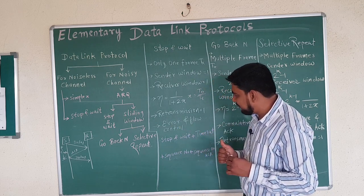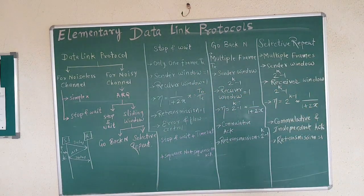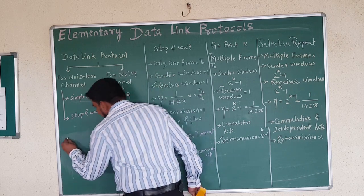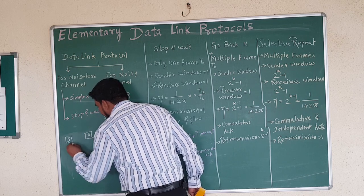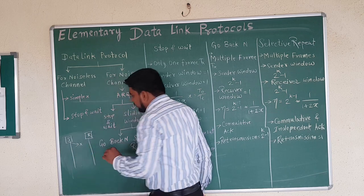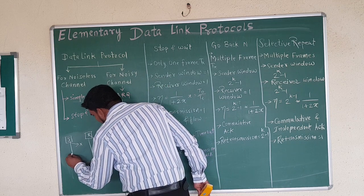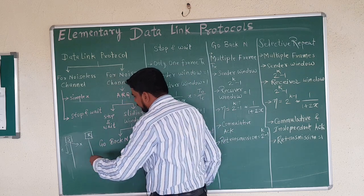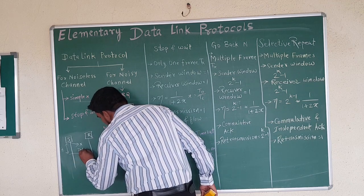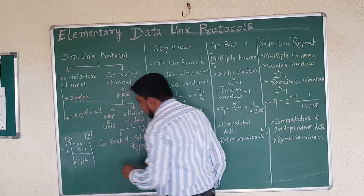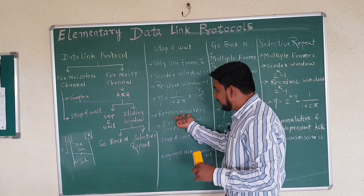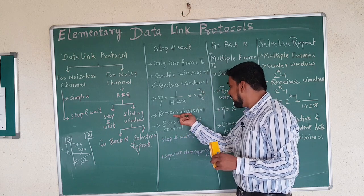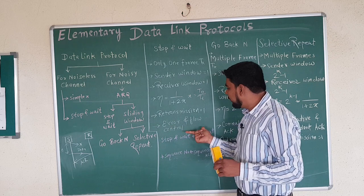Retransmission: the sender sends information, but it is lost and does not reach the receiver. The sender waits for an acknowledgement for a particular time. If no acknowledgement is received, it retransmits the data. After retransmission, it will receive the acknowledgement that the data was received. In stop-and-wait, retransmission is also single — one frame at a time.